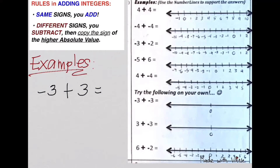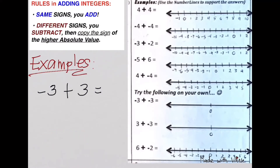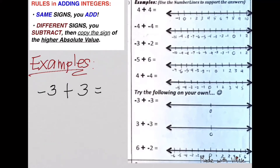I know you're getting comfortable with adding integers. Let's have one last set of examples. Negative 3 plus positive 3 — are they of the same signs? No, they're different signs. One is negative, one is positive. So what are we going to do? Subtract them. Negative 3 plus 3: different signs, subtract — 3 minus 3 is 0. So that is your final answer.